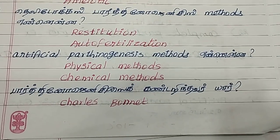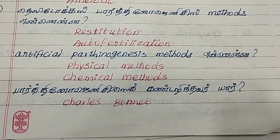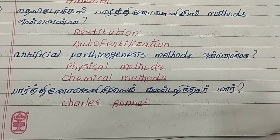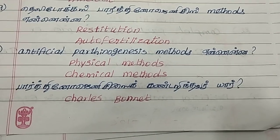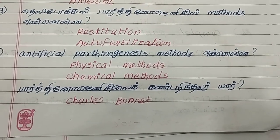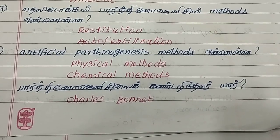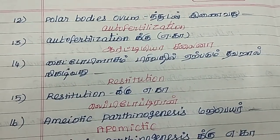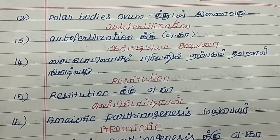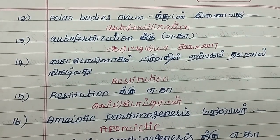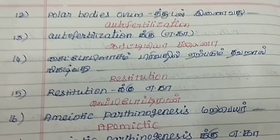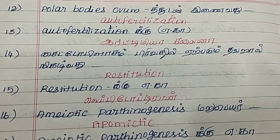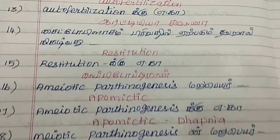Artificial pathogenesis methods: physical methods and chemical methods. Parthenogenesis was coined by Charles Ponet. Polar bodies are present. Autofertilization example: Artemia salina.